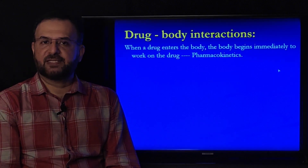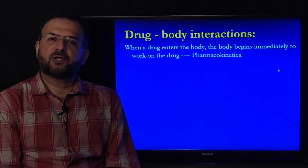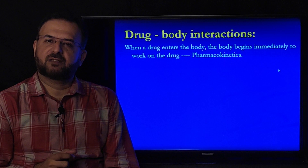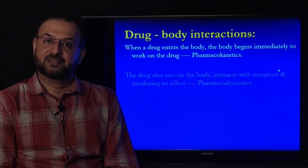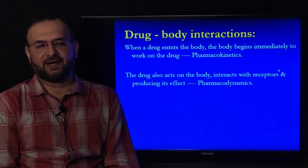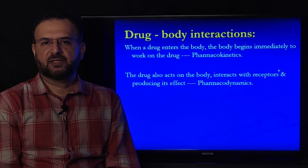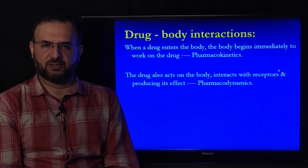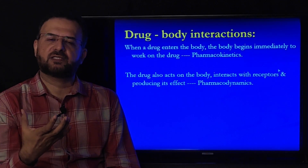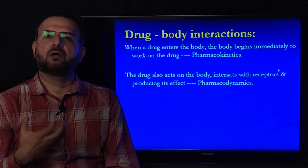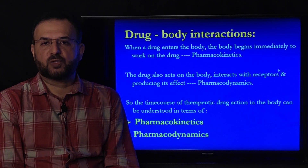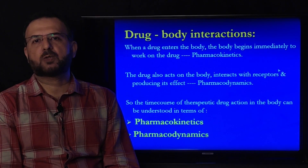When a drug enters the body, the body immediately begins to work on the drug — what the body does to the drug is known as pharmacokinetics. Secondly, the drug also acts on the body, interacting with receptors and producing its effects — what the drug does to the body is pharmacodynamics. So the two main branches of pharmacology are pharmacokinetics and pharmacodynamics, and the time course of therapeutic drug action can be understood in terms of these two.